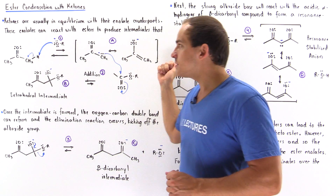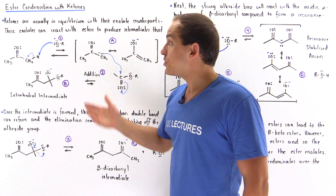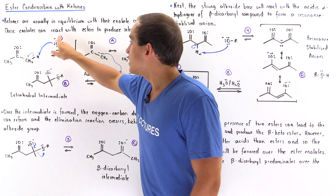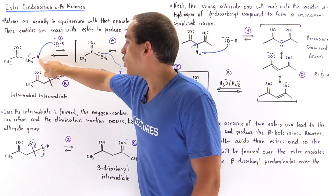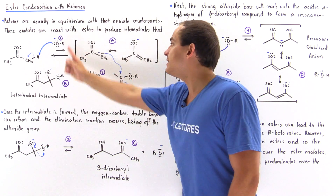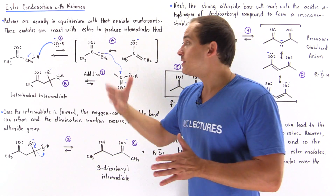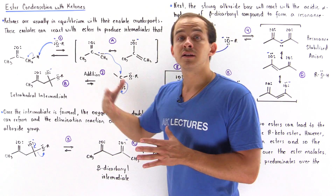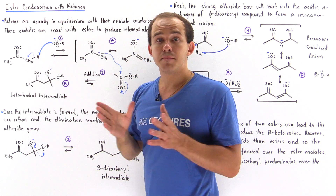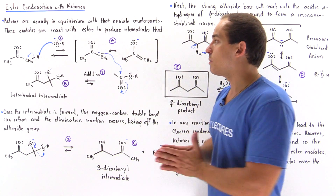So in the first step, we have the alkoxide base that reacts with the ketone, our Lewis acid. The alkoxide base deprotonates one of our alpha-hydrogens to form a ketone enolate. Remember, unlike in the Claisen condensation where our strong alkoxide base deprotonates the alpha-hydrogen of the ester, in this case we have the more acidic ketone.